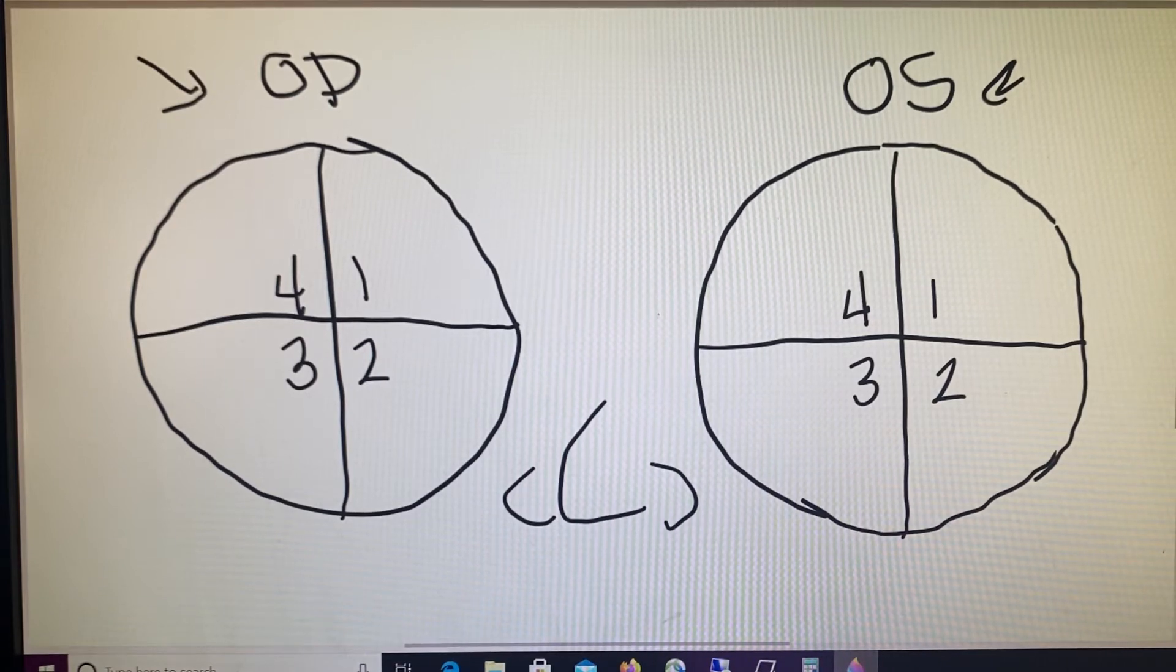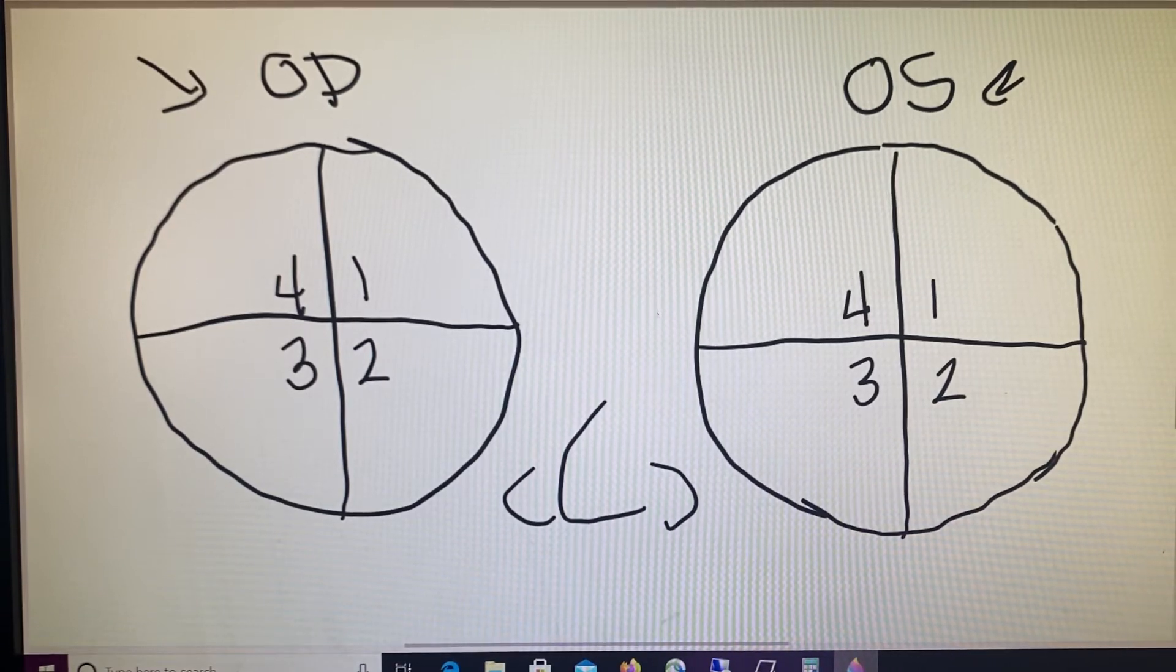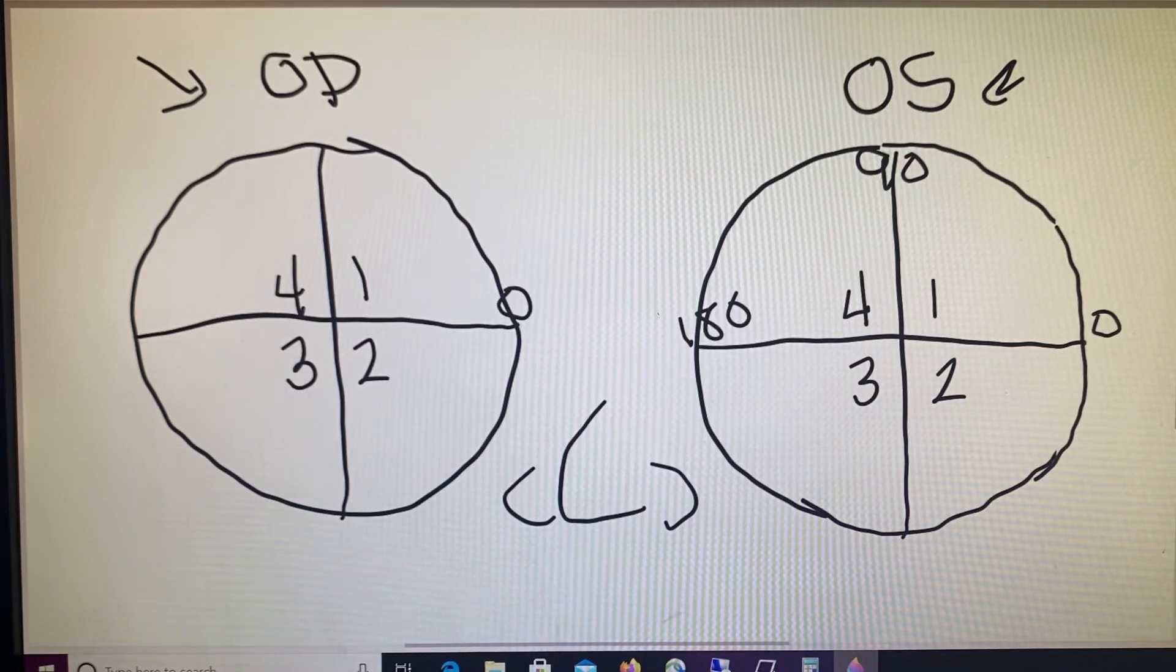We can also think about these as meridians. So again, because this is as if we are looking at the patient, we have zero, 90, 180 on one eye, and zero, 90, and 180 on the other.